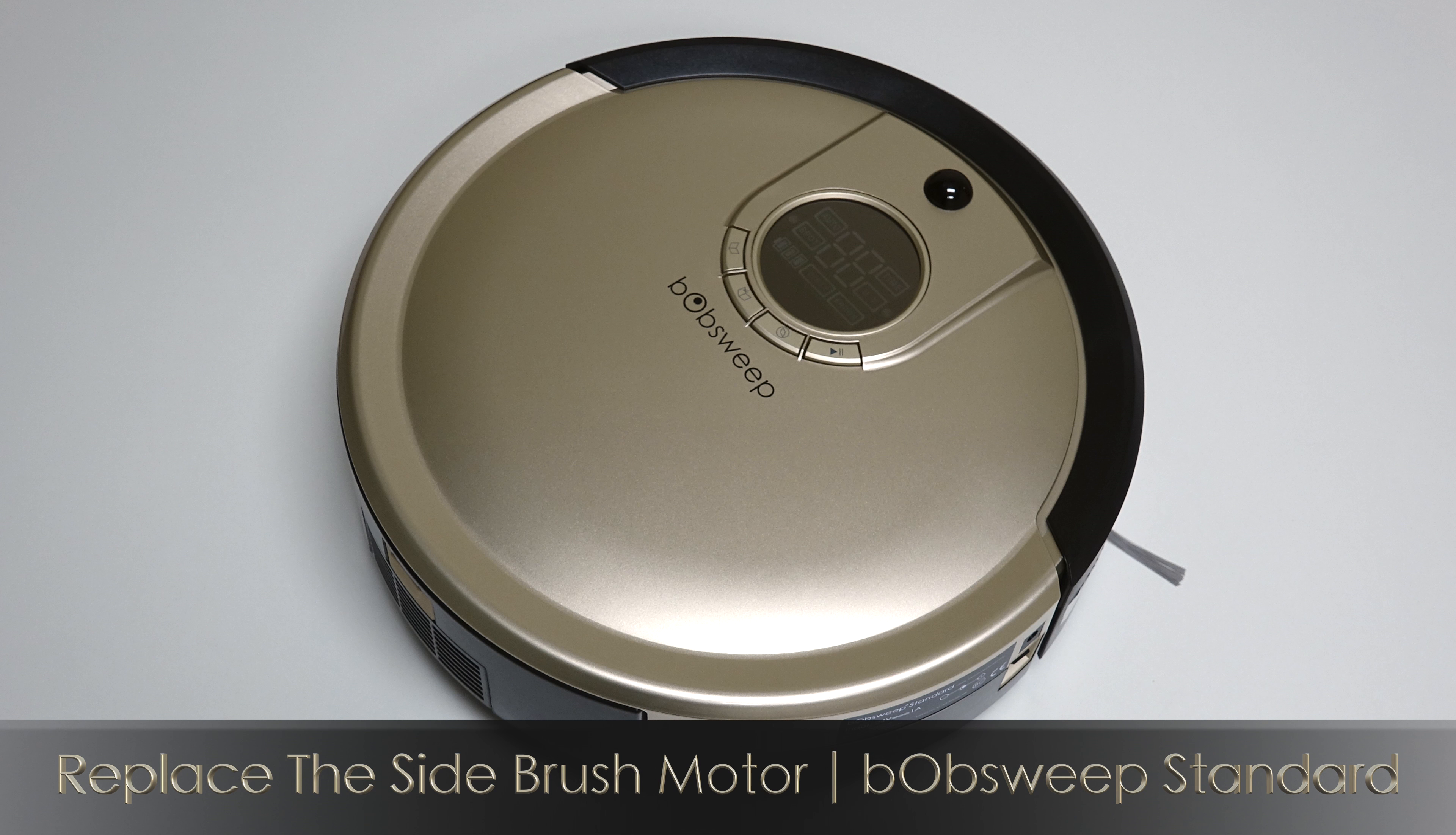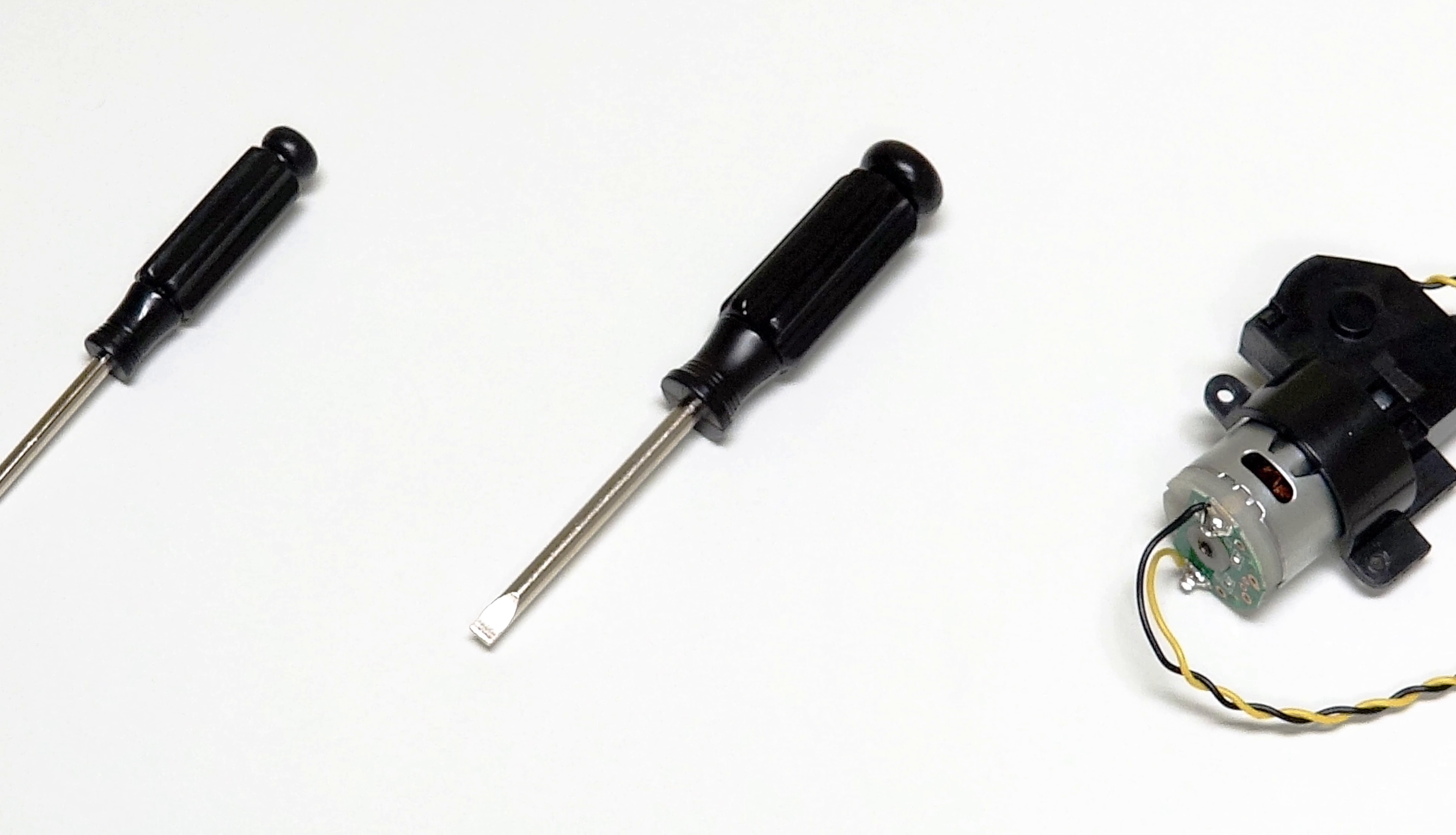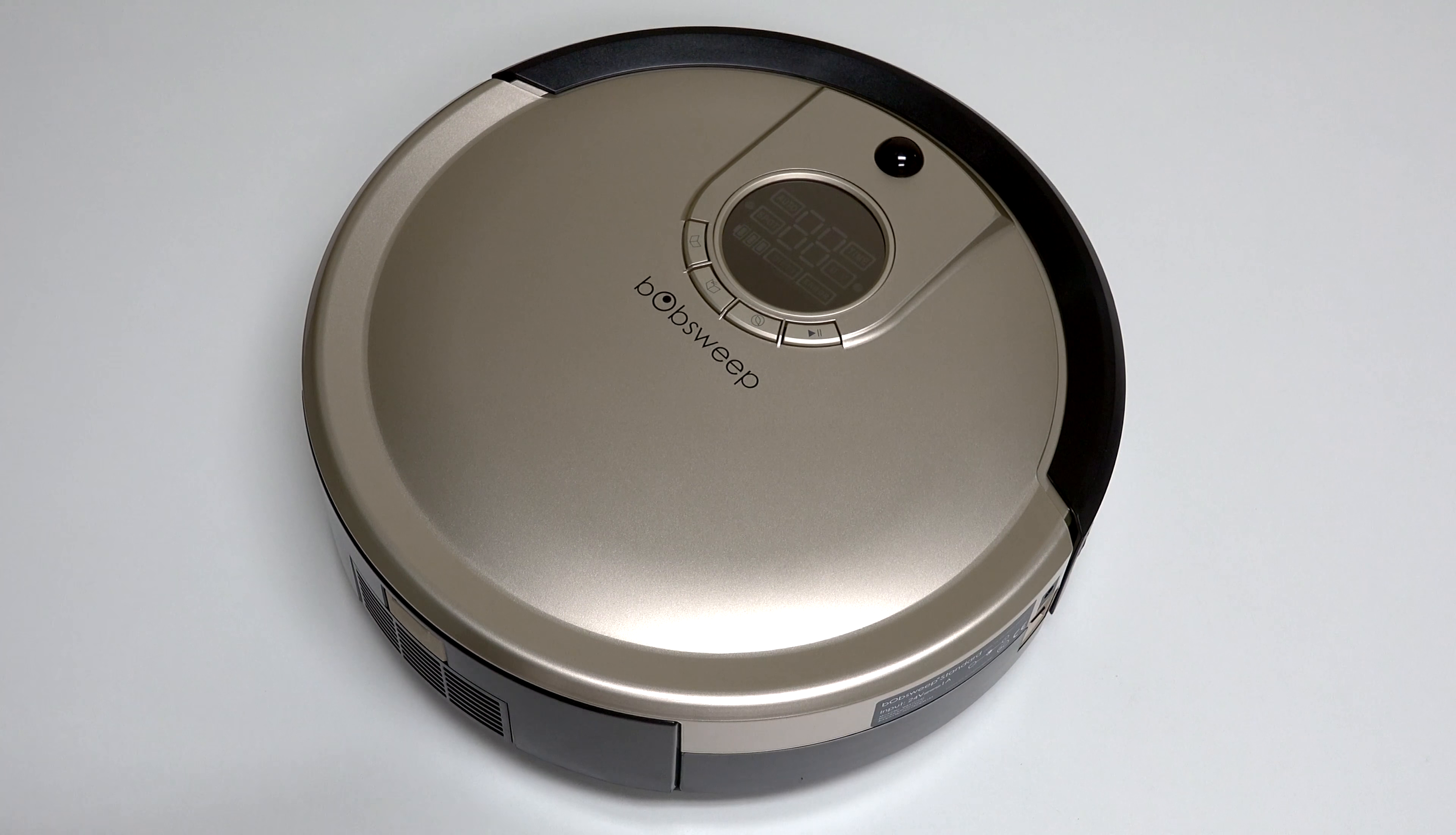To replace the side brush motor on Bob Sweep Standard, you'll need a Phillips head screwdriver, a flat head screwdriver, and a new side brush motor. Before starting any repair on Bob, turn his side power switch off and remove his dustbin.